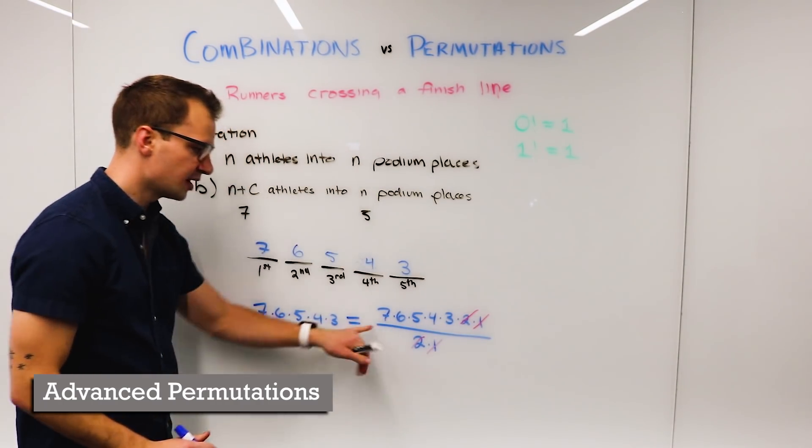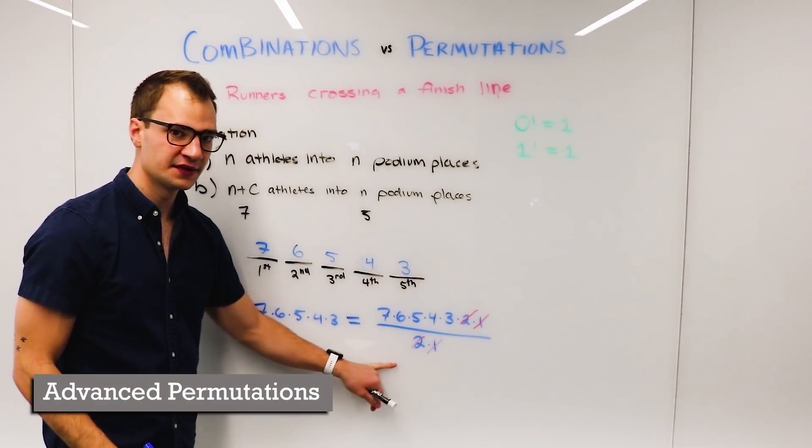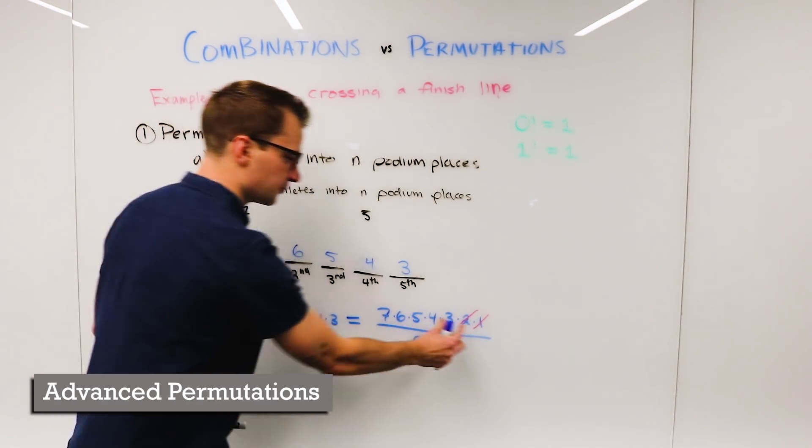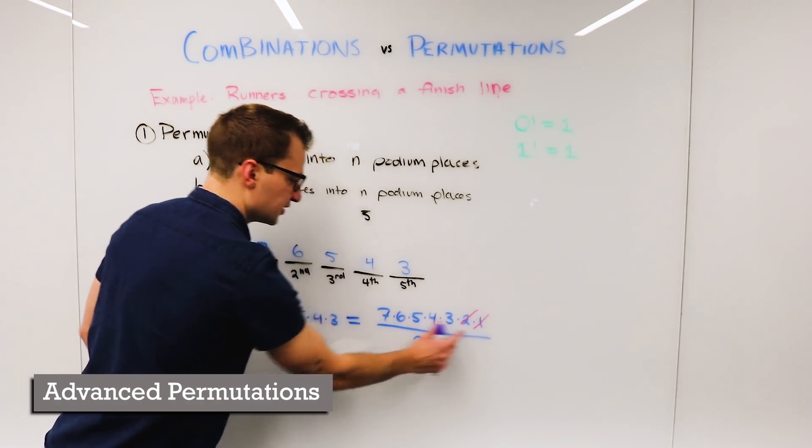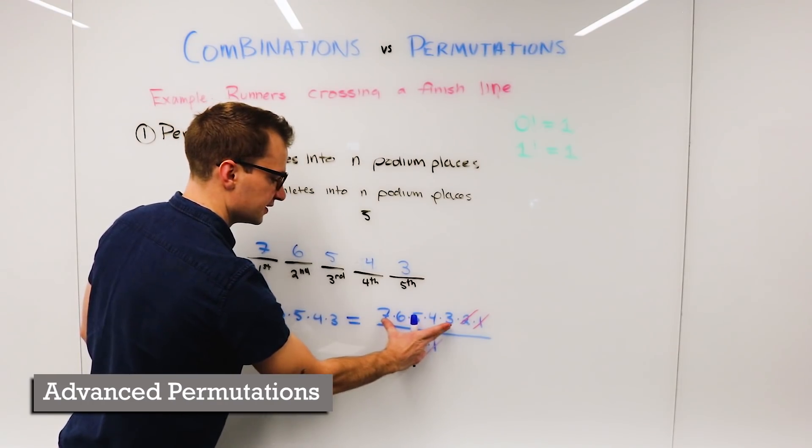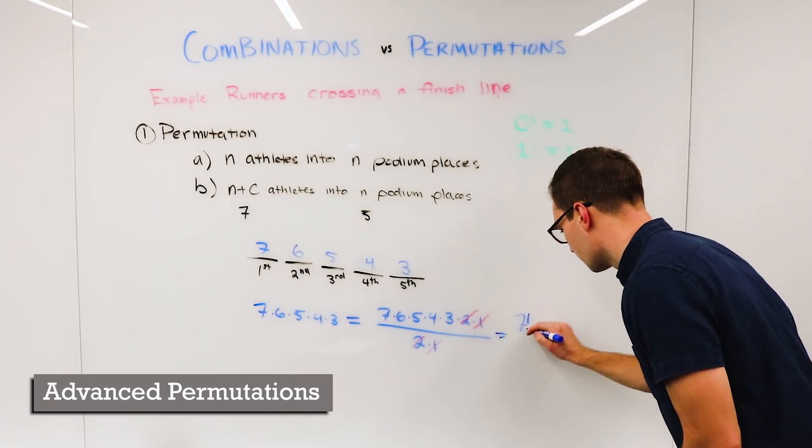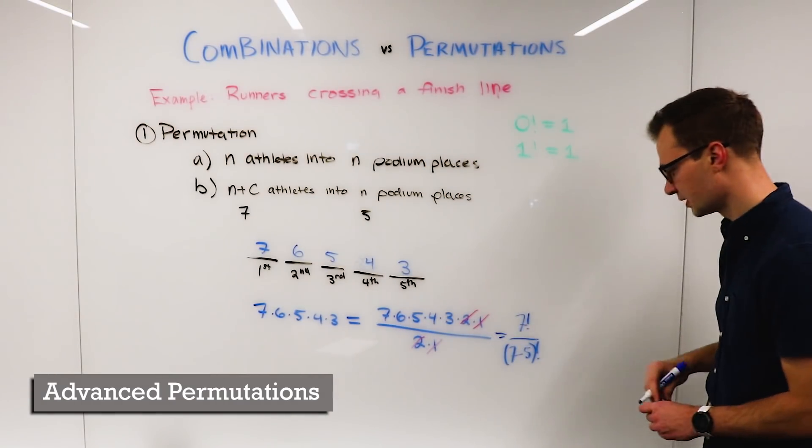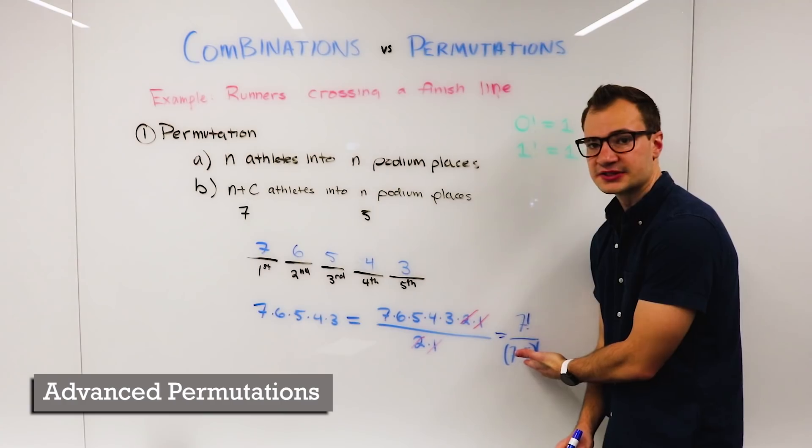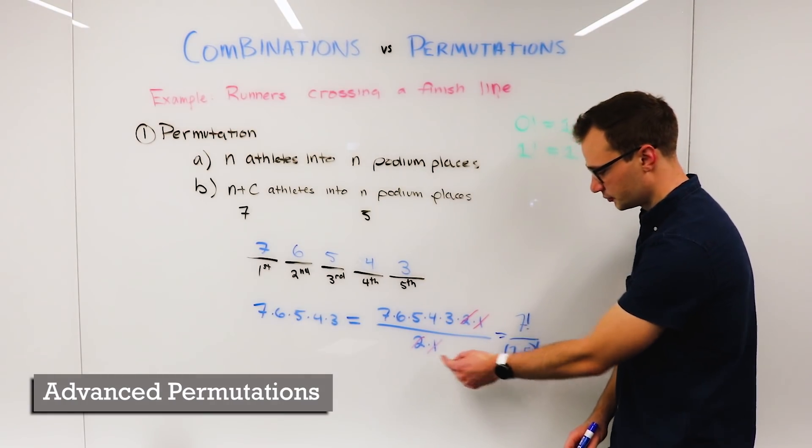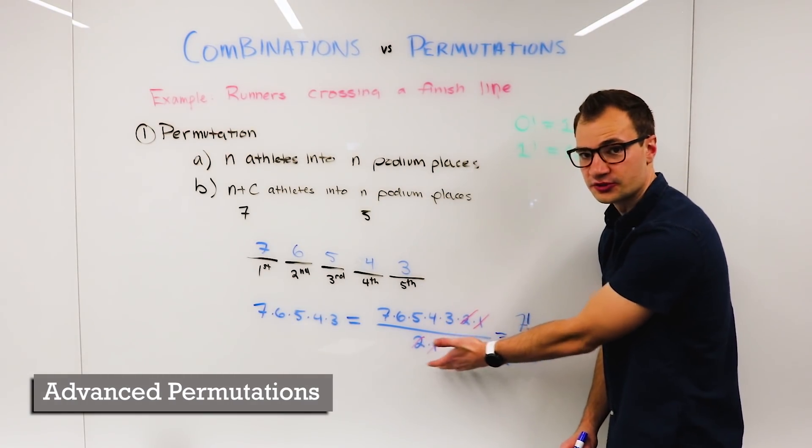Now we see that this top is seven factorial and this bottom is actually going to be the end chunk. So seven minus this number factorial. Let me write it out. If we take seven minus five factorial, that leaves us with two factorial, which is two times one.